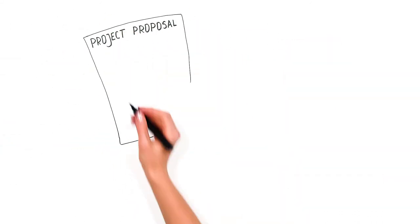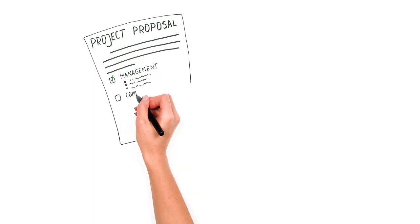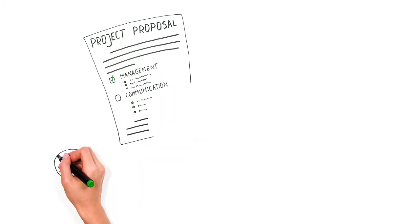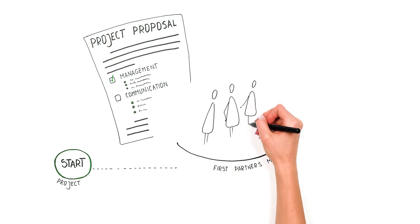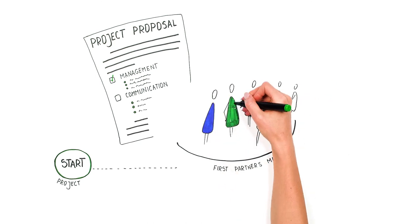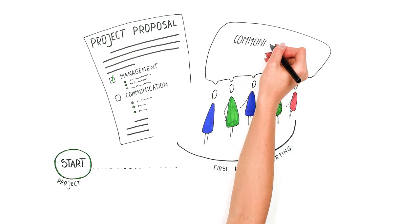Both aspects of management and communication must be described in the project proposal. When the project starts, the first partner meeting can be a good moment to get a better understanding of communication peculiarities of each partner and review communication agreements which are defined in the project proposal.